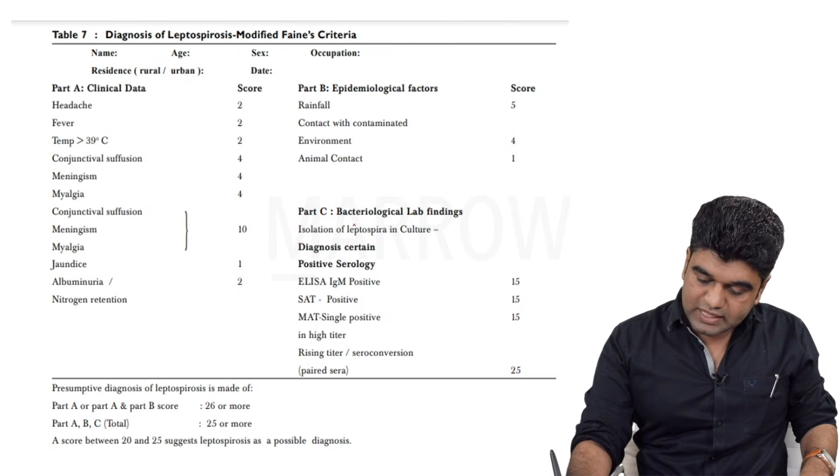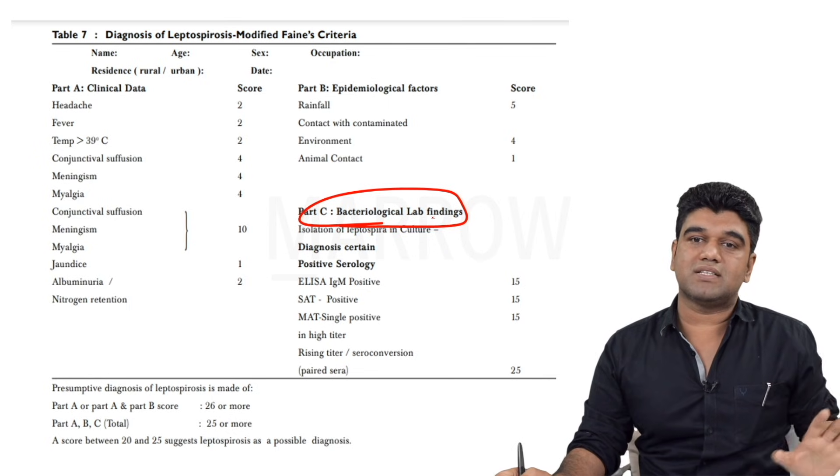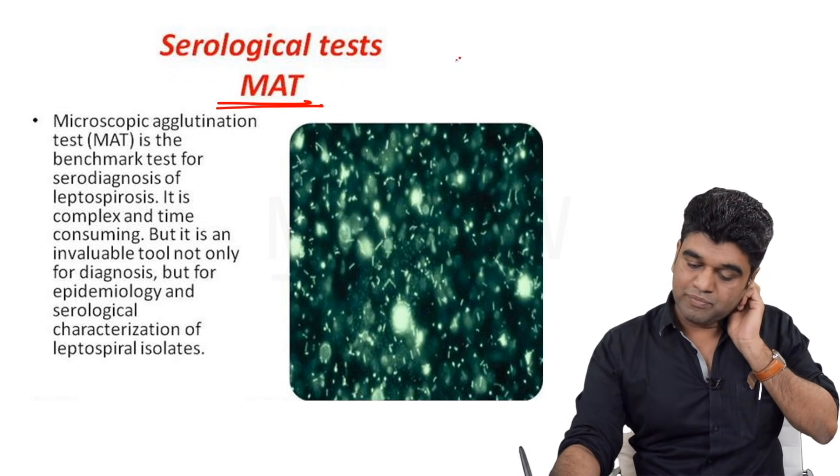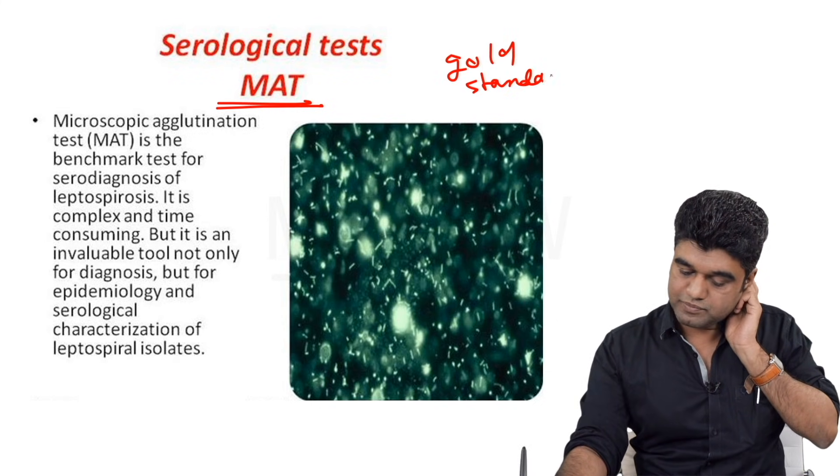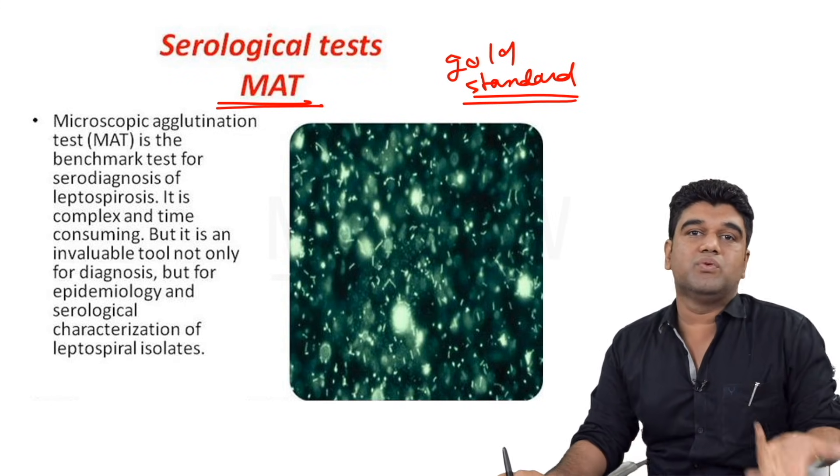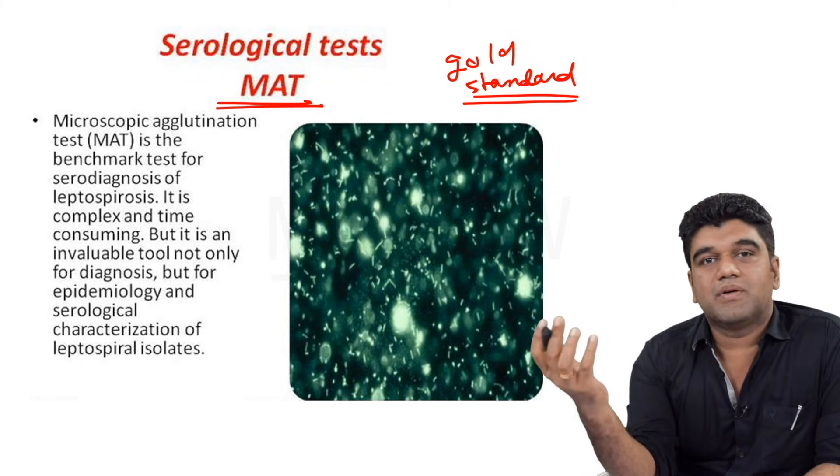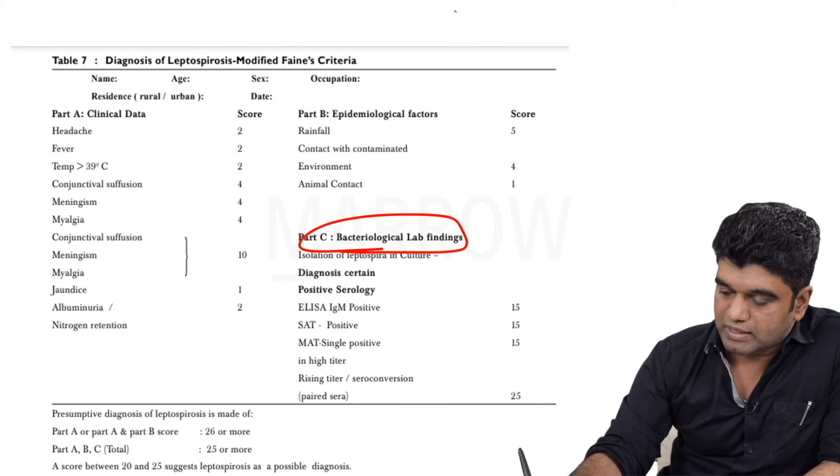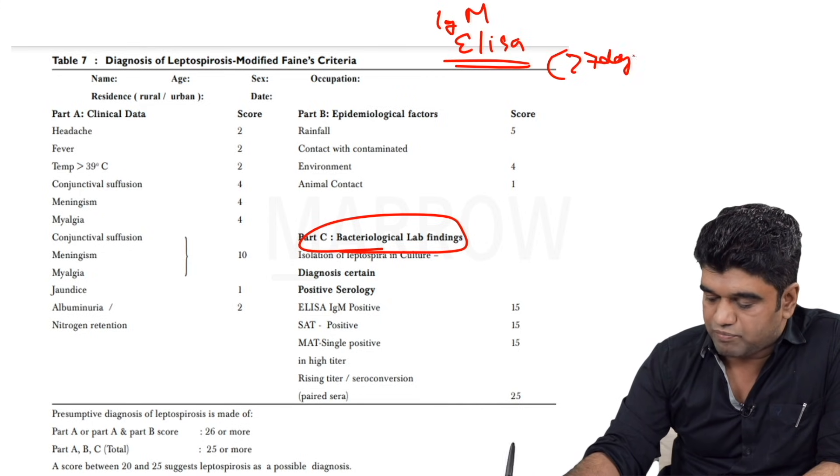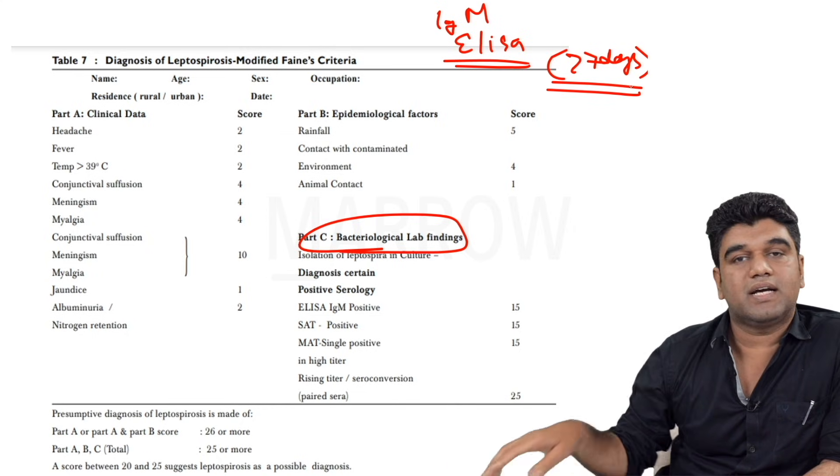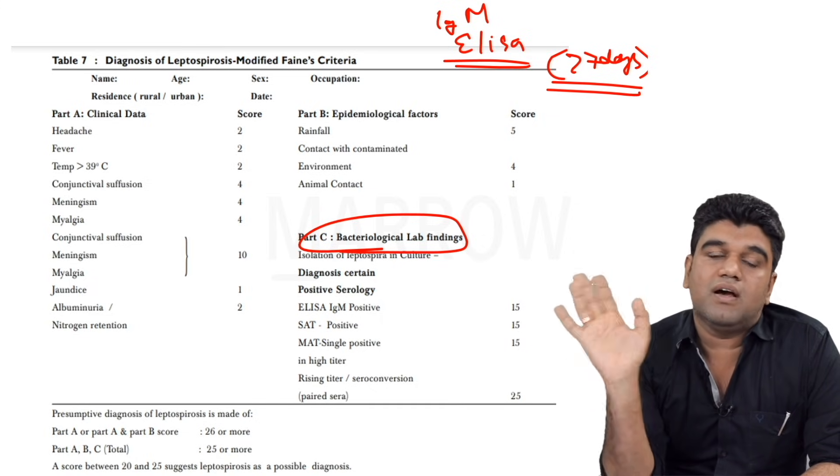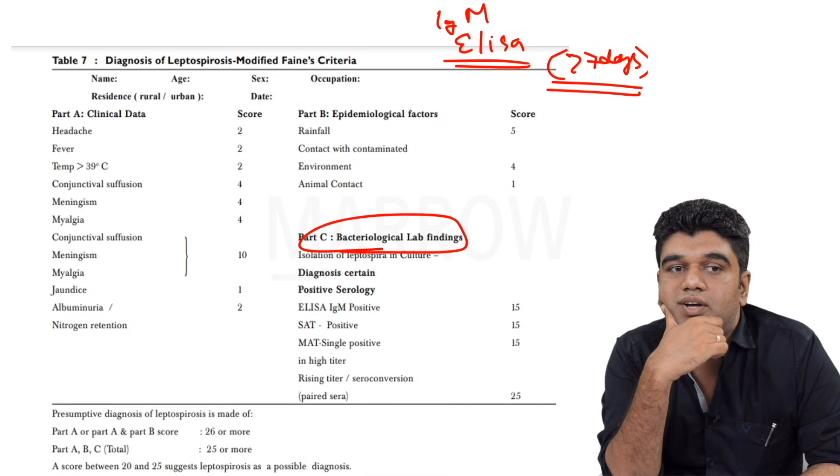The bacteriological lab findings tell us one very important point - that serological tests are of not much value. The best test you have is called the microscopic agglutination test or the MAT test, which for your exam is the gold standard. It has got only research value, that's the problem. We are not using MAT and even if you use MAT, it doesn't have much value. It's a very complex, time-consuming, cumbersome process. The only thing we can use is your IgM ELISA, and IgM ELISA is generally positive after seven days. Single titer high of MAT, if you can do it in centers like Chennai, is definitely of value. But in a common setting when you treat a patient, IgM ELISA positivity is more common.